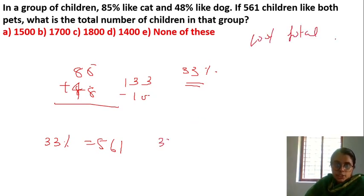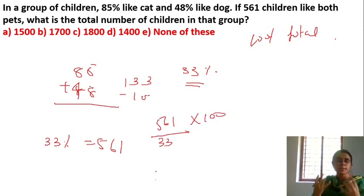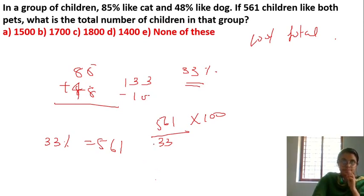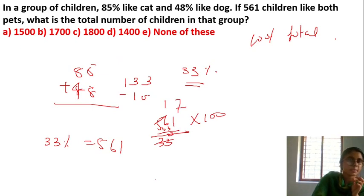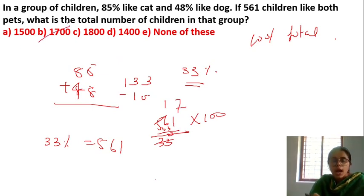The total number of children is calculated from 33% equals 561, giving the total number of children in the group.